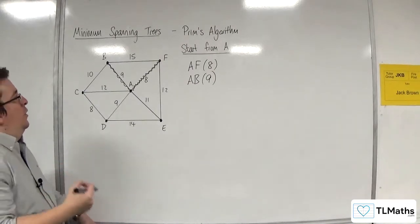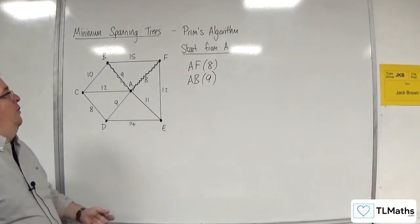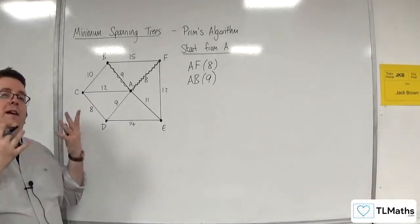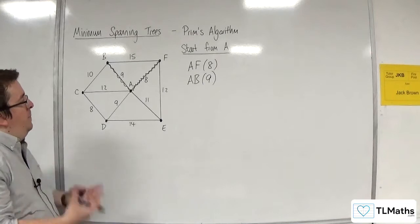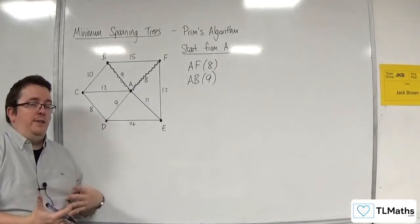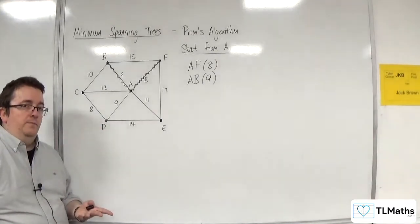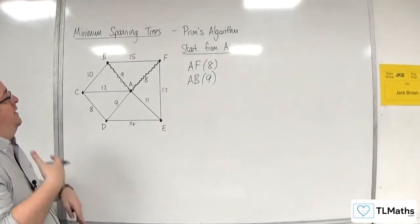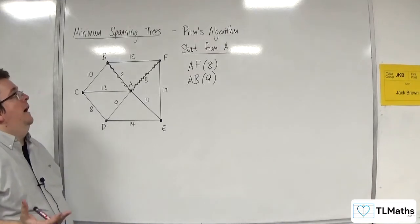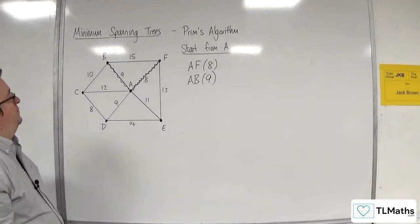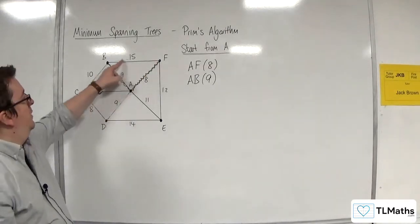I now look at all of the edges coming out of A, B, and F, the ones that I have connected to the tree, and I pick the one with least weight that won't cause a cycle. So I want to connect the next vertex. Now, 15 will never get picked because it would create a cycle.